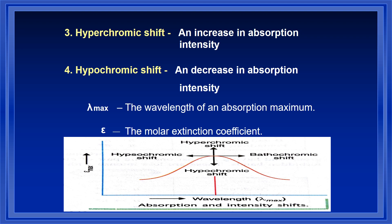To summarize: hyperchromic means an increase in absorption intensity, and hypochromic means a decrease in absorption maximum. These two are related to the epsilon value.